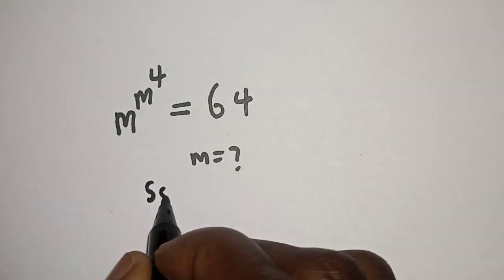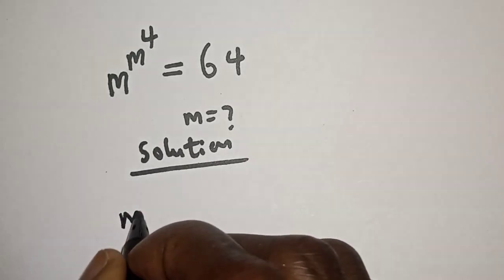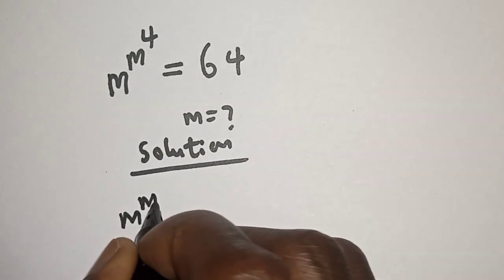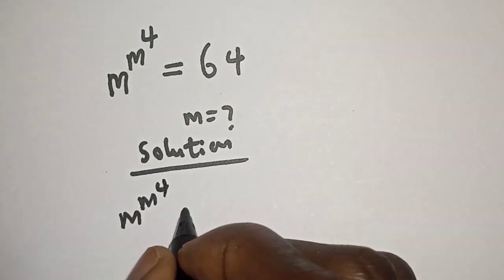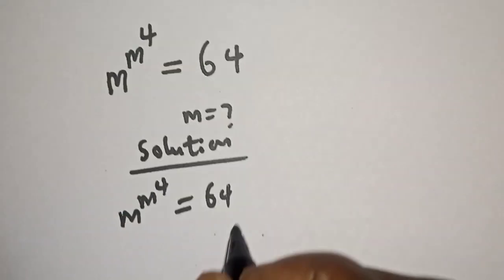Solution. We have the given equation: m raised to power m raised to power 4 is equal to 64.